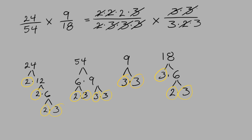So what we have left over: on the top all we have is 2, and on the bottom we have 3 times 3 which is 9. So 2 over 9 is our final answer.